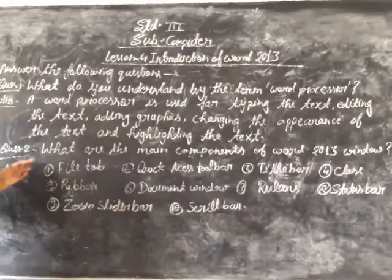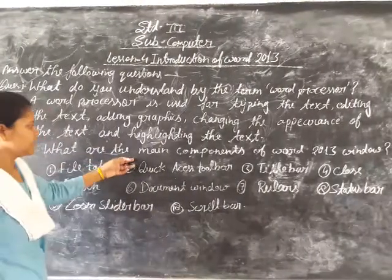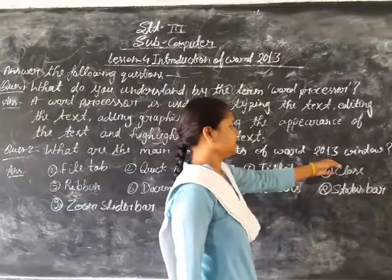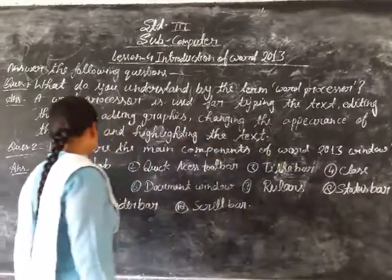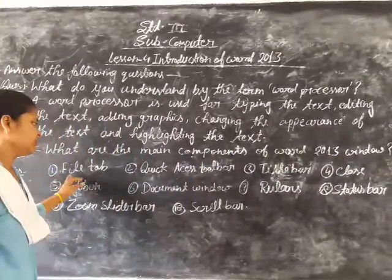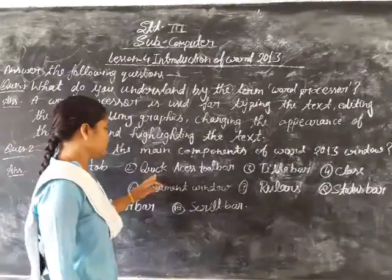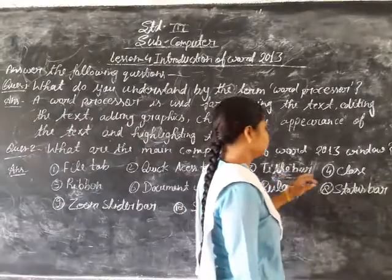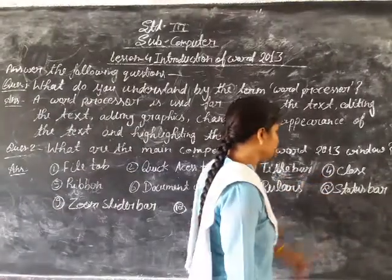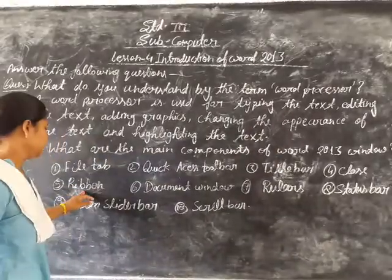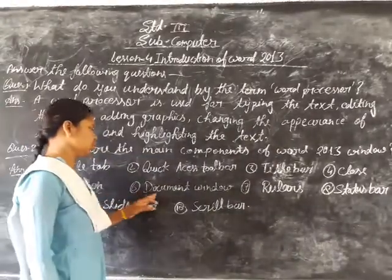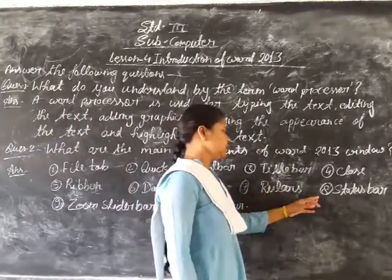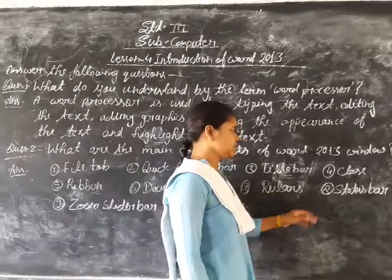Question number second: What are the main components of BERT 2013 Window? Answer: First, file tab. Second, quick access toolbar. Third, pattern bar. Fourth, close. Fifth, rebirth. Sixth, document window. Seventh, rulers. Eighth, indicators bar.